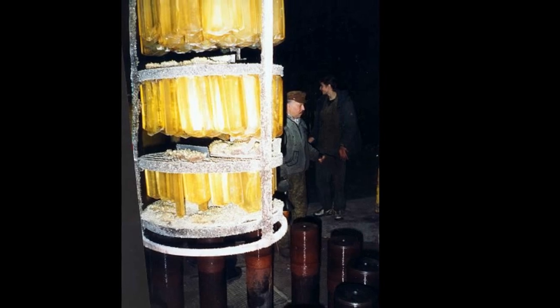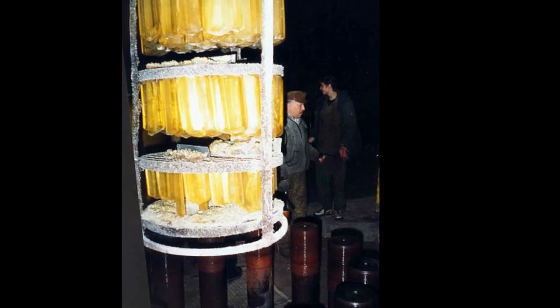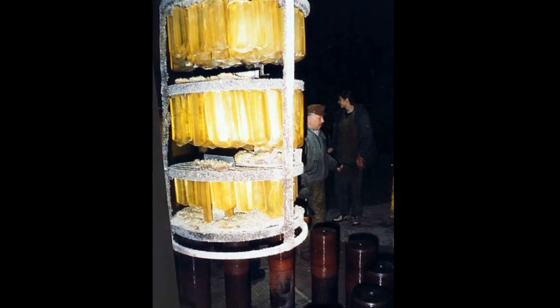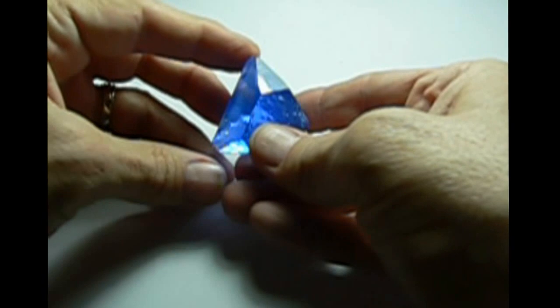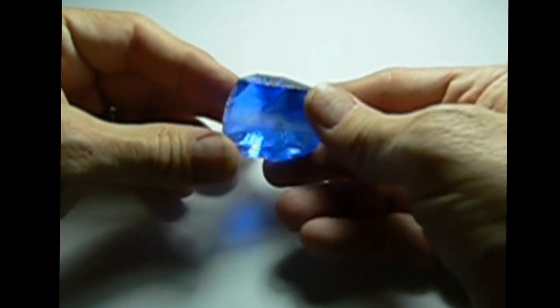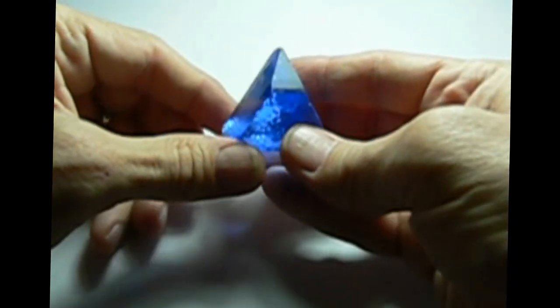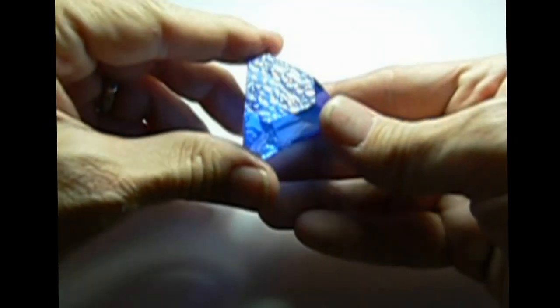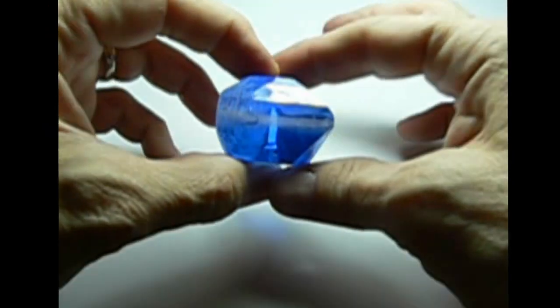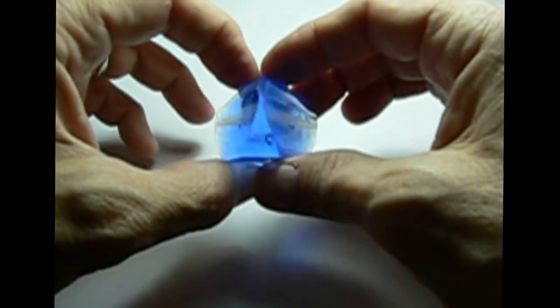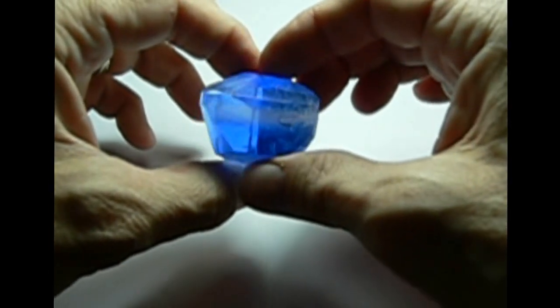So this gives you an idea of how the process makes these crystals. This one is blue, it's been colored by cobalt, and you can clearly see the seed crystal around which this one was grown. All of these crystals have a seed inside of them.